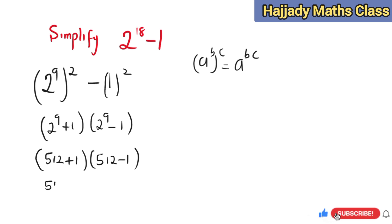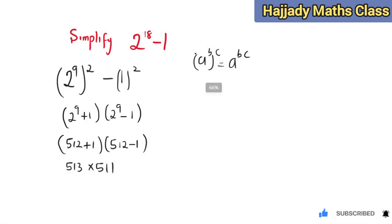So we have 513 multiplied by 511, and 513 can be split as 500 plus 13, and also 500 plus 11. From here let's distribute this, that is let's expand.